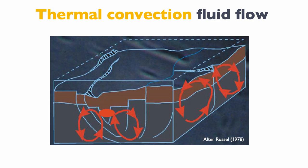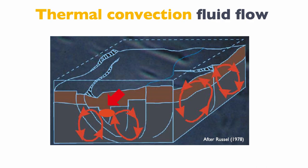Another potential mechanism is thermal convection fluid flow. If you have a series of fractures deeply rooted and going all the way to the basement, the basement is very hot thanks to the geothermal gradient. Those fluids will be heated, the hot fluid will come up the fracture, cool down, and then sink again to be reheated. That creates convection zones of fluid flow that can circulate through limestone and generate a front of diagenesis.